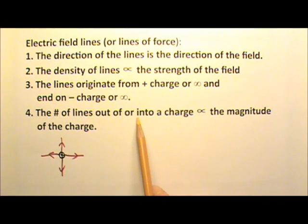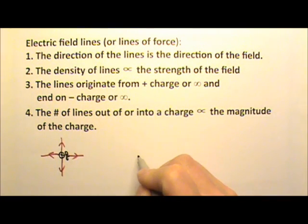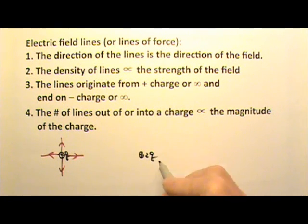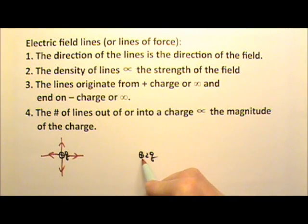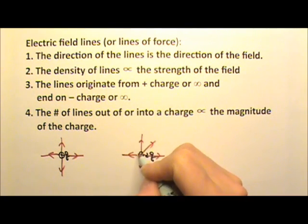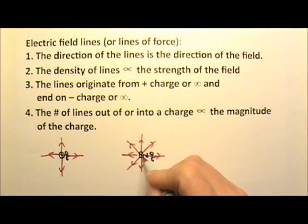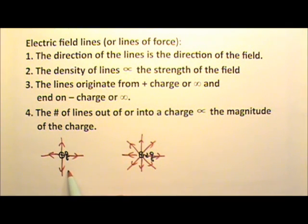The number of lines out of or into a charge is proportional to the magnitude of the charge. So if this charge is positive 1Q and another charge has positive 2Q, and I draw 4 lines for this charge, that means I will need to draw 8 lines for the other charge — twice the charge, twice the lines coming out. Of course, I can choose to draw 8 lines for the positive 1Q, in which case I would draw 16 lines for the positive 2Q.